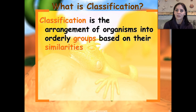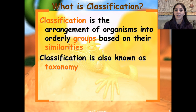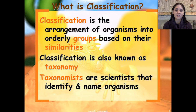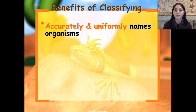So just what is classification? It's the arrangement of organisms into orderly groups based on their similarities. Classification is also known as taxonomy, and that's what us biologists refer to it as. A person who studies or identifies and names organisms is called a taxonomist. So taxonomists study taxonomy, or classifying organisms.